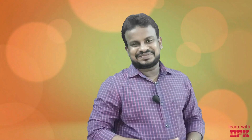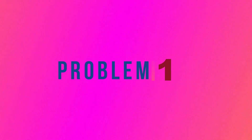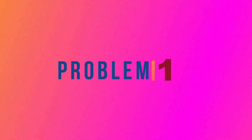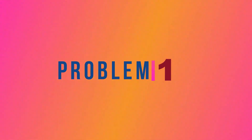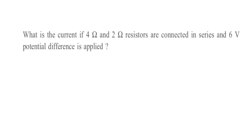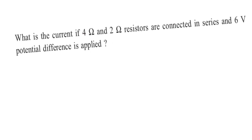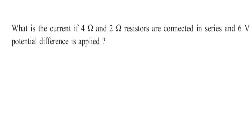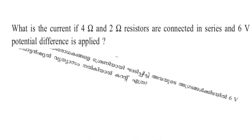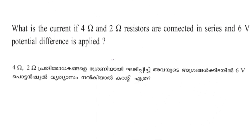Let's go to the problem section. What is the current if 4 ohm and 2 ohm resistors are connected in series and 6 volt potential difference is applied? The 4 ohm and 2 ohm resistors are visible.